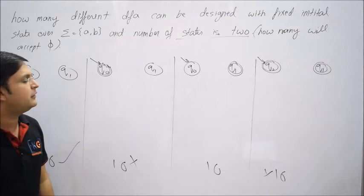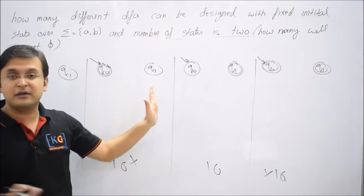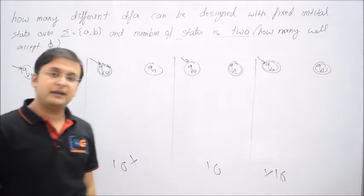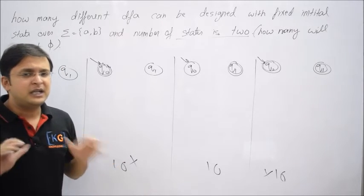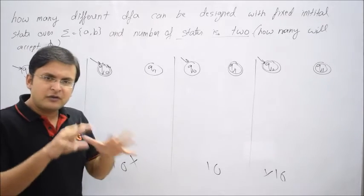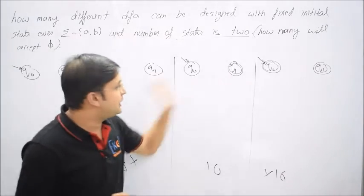Now that is a favorable case. Why? Here you see Q0 is an initial state but is non-final, but Q1 is final. Now what we want? We want that nothing should be accepted.